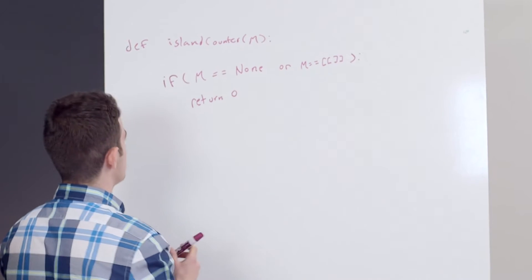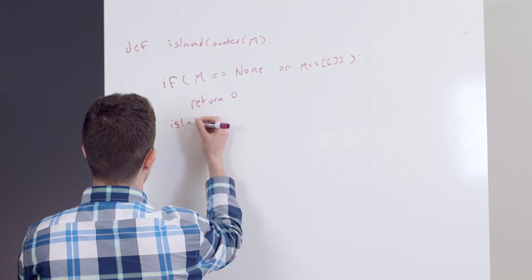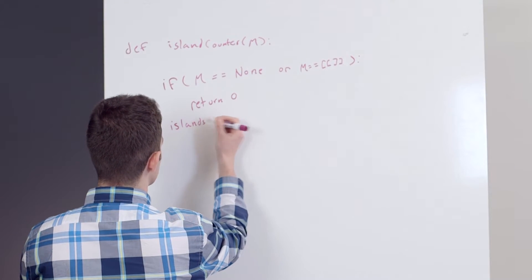Now if this is not the case, I'm just going to initialize my islands variable to 0, which is the number of islands.